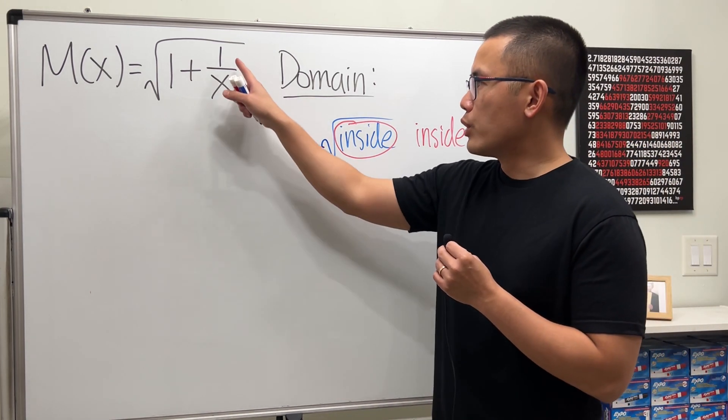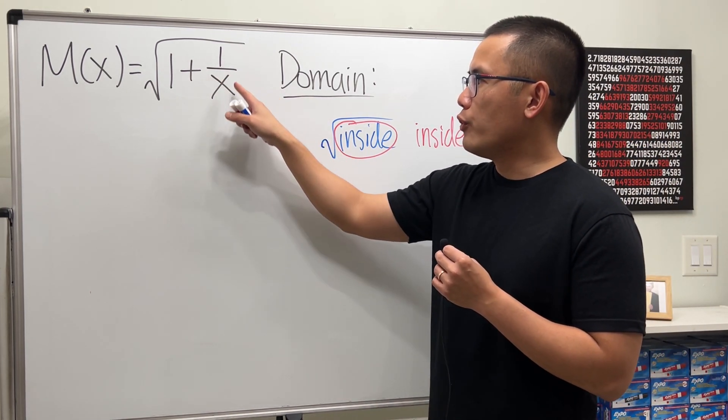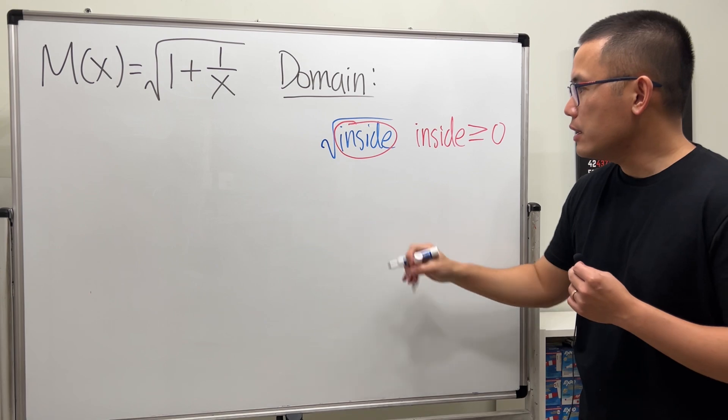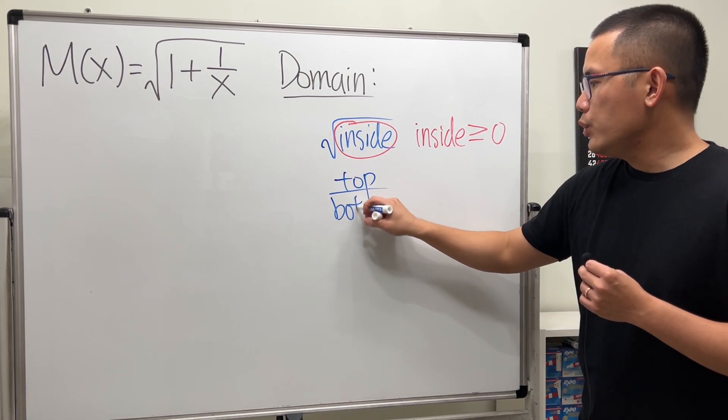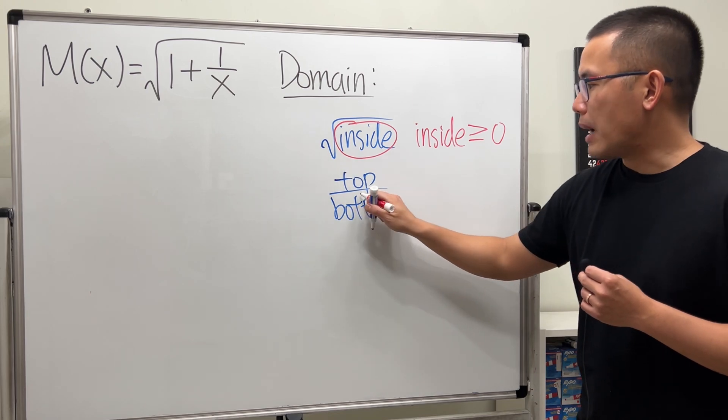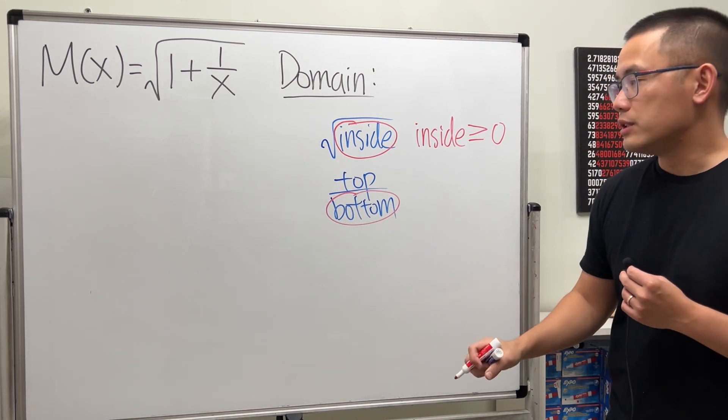And the second thing we have to worry about is, because we have 1 over x, here we have a fraction. And whenever we have a fraction, we will have to make sure the bottom is not equal to 0.